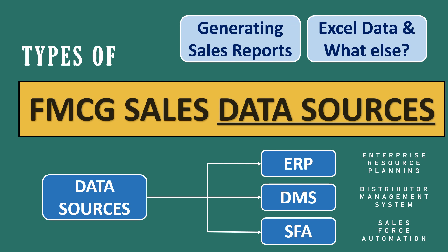Hello everyone, welcome back to my channel. Today I'll talk about types of FMCG sales data sources — the sources through which we can capture the data. First we have ERP, then we have DMS, and then we have SFA softwares. These are primarily the three major sources from which we can get the sales data, and it is very helpful to generate sales reports, MIS reports, and more.